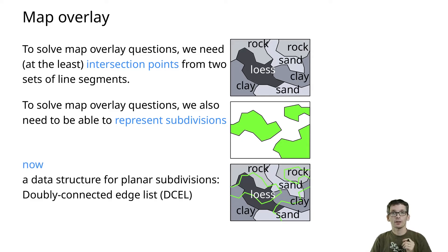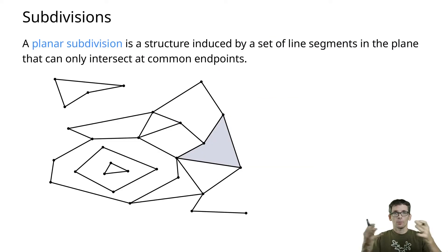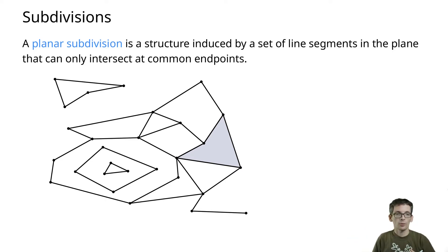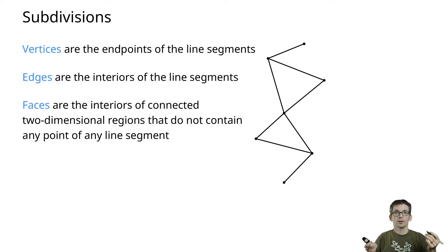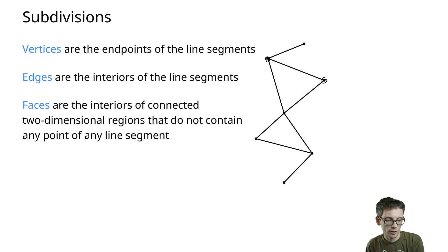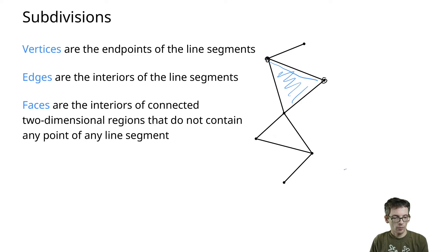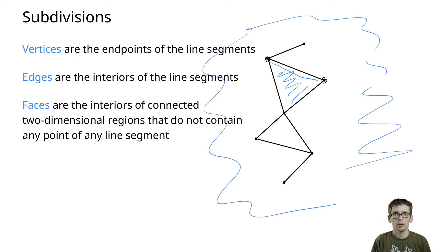The data structure is called doubly connected edge list, or DCEL for short. A planar subdivision is a subdivision of the plane induced by a set of non-intersecting line segments, or they only intersect at common endpoints. It has as objects vertices, edges, and faces. The vertices are the endpoints of these line segments. The edges are the interiors of those line segments. The faces are two-dimensional connected regions that don't contain any of the line segments, including the outer face.